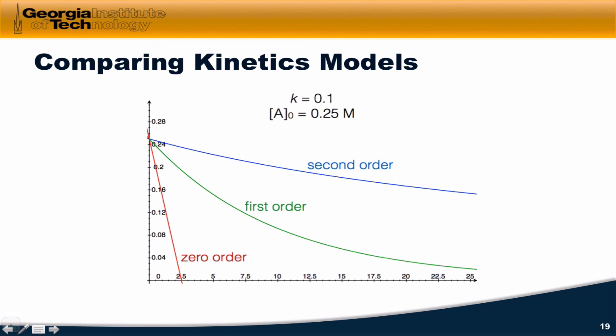Finally, I want to compare the kinetics models that we've developed so far, the zero order, first order, and second order models, for the same value of the rate constant, 0.1, and the same initial concentration, 0.25 molar. The graphs we're seeing here are the molarity of A on the y-axis and time on the x-axis. What we find is that the zero order process is very rapid, decaying very rapidly until no reactant is left, down here at the bottom, at which point the reaction will stop, since we're out of reactants.